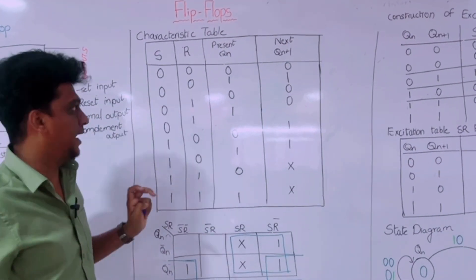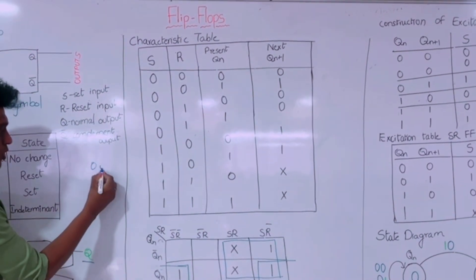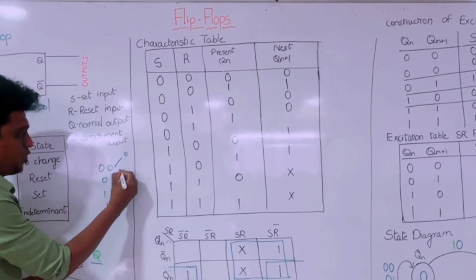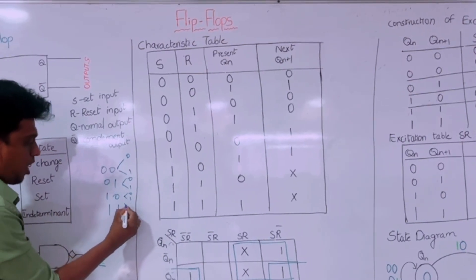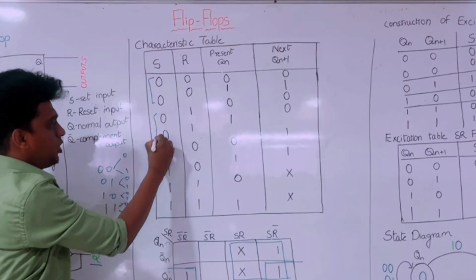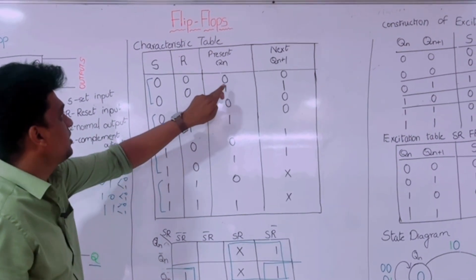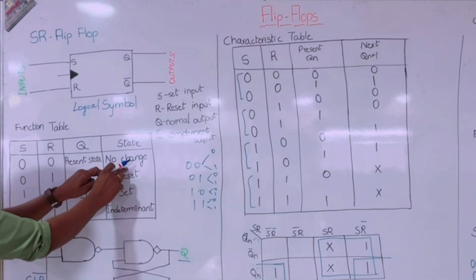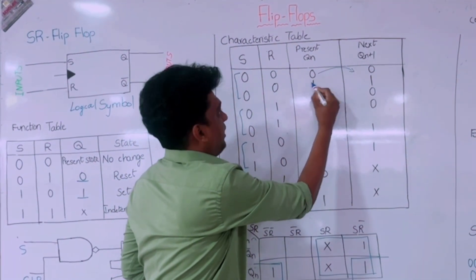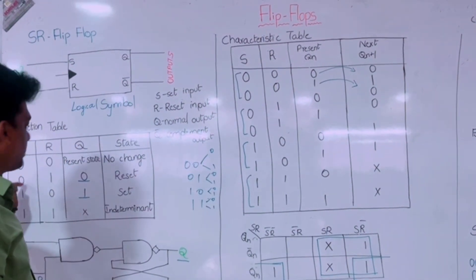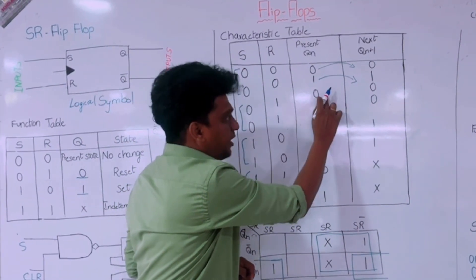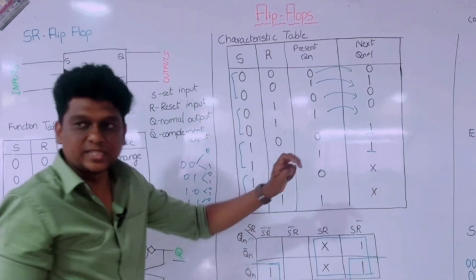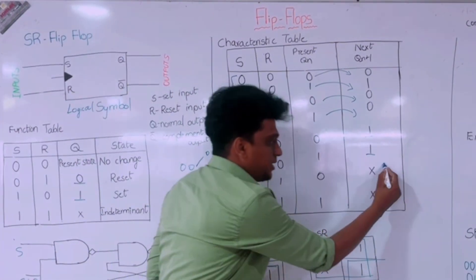This is the characteristics table. There are four input combinations: 0,0 — 0,1 — 1,0 — and 1,1. For each combination we have present states 0 and 1. For input 0,0 there is no change, so the present state carries directly to the next state. For input 0,1 it is reset — whatever the value, the next state becomes 0. When input is 1,0 we get next state 1,1 — the set condition. Finally, when the inputs are 1,1 it is the indeterminate case.